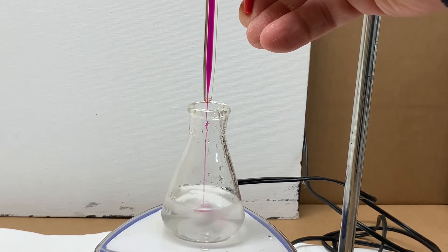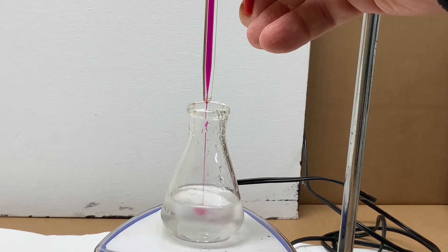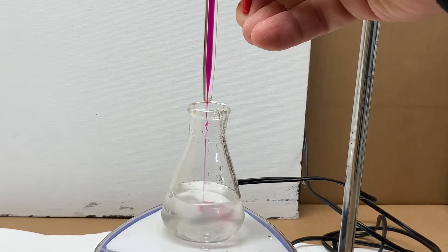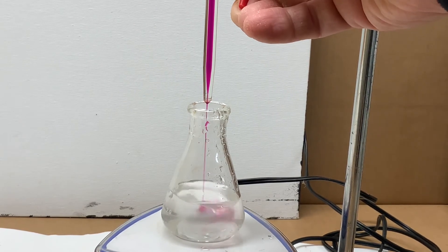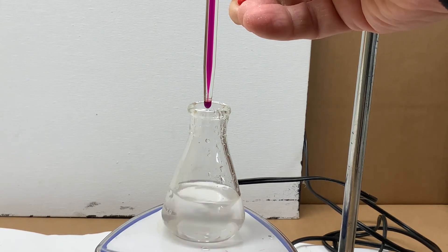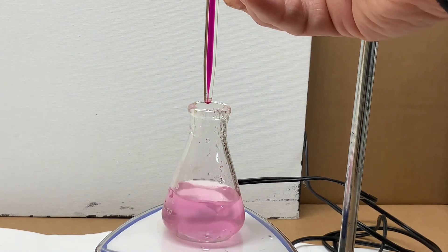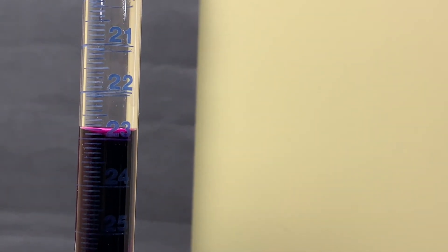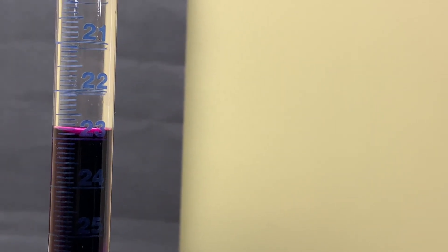We're pouring in permanganate; the color immediately disappears because all products are colorless. When the pink remains, the iron has run out and the potassium permanganate is no longer reacting. Make the final reading and record it in your data table.